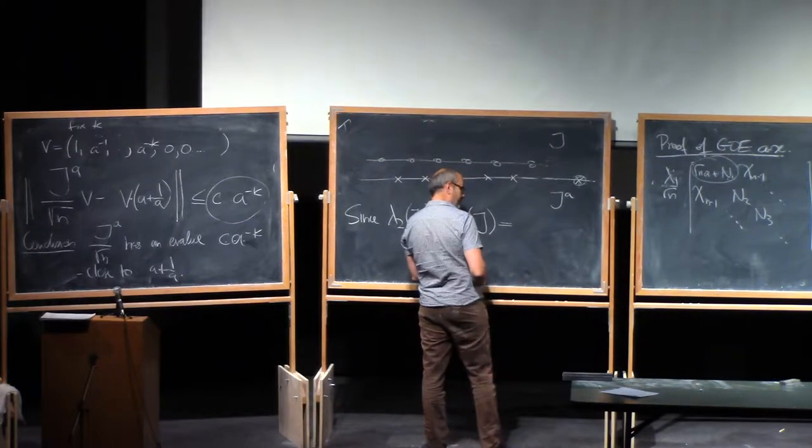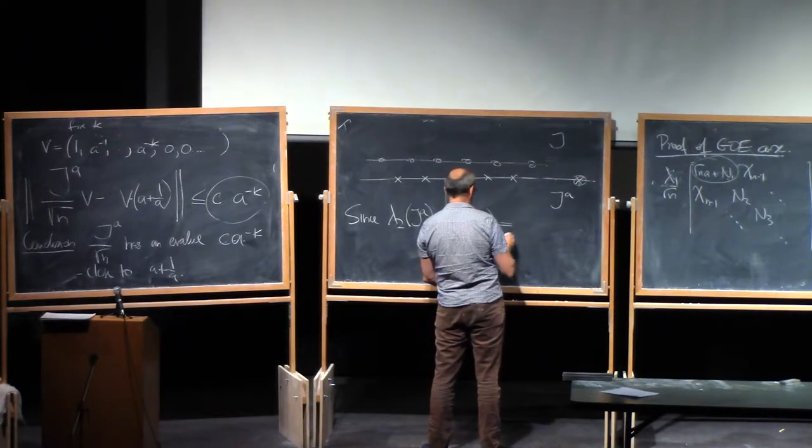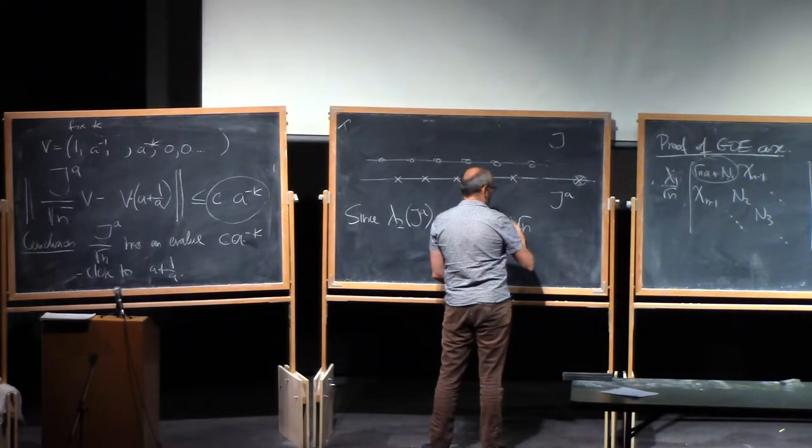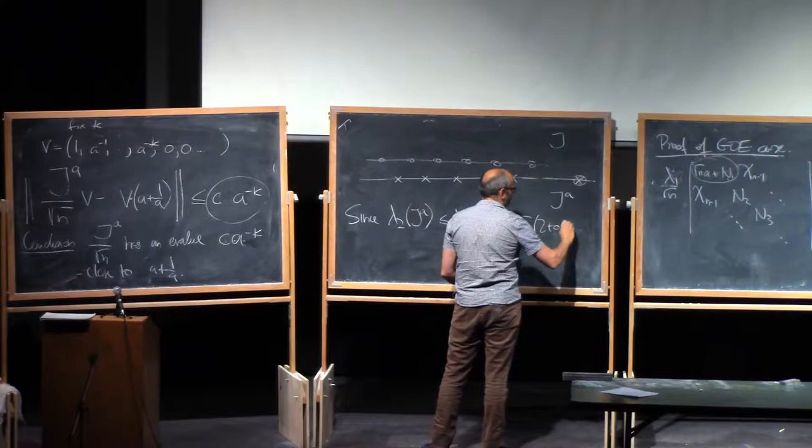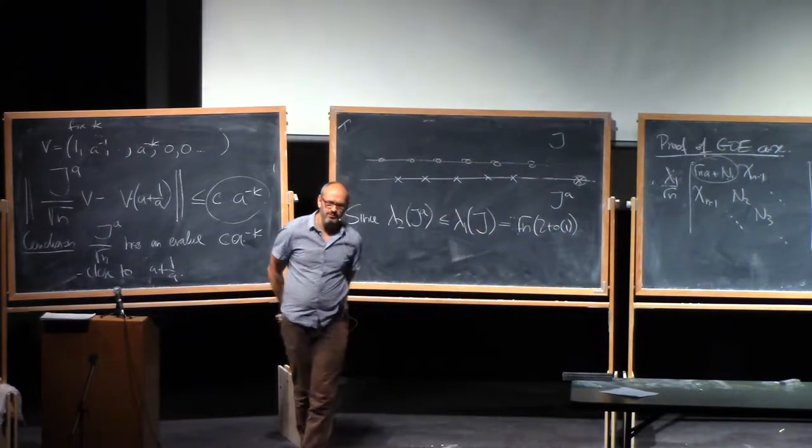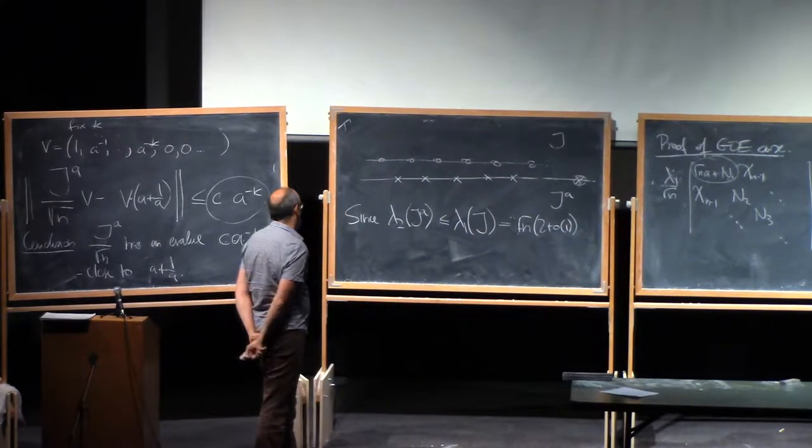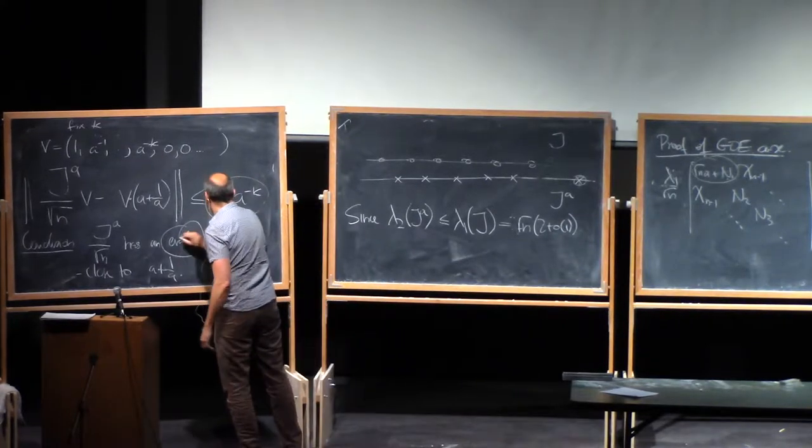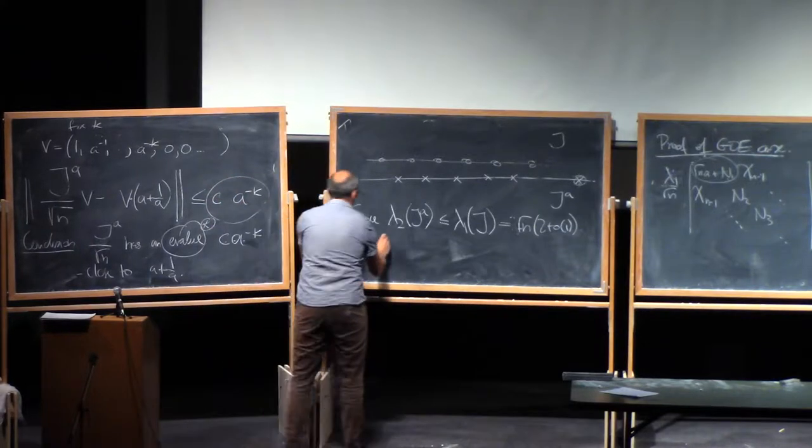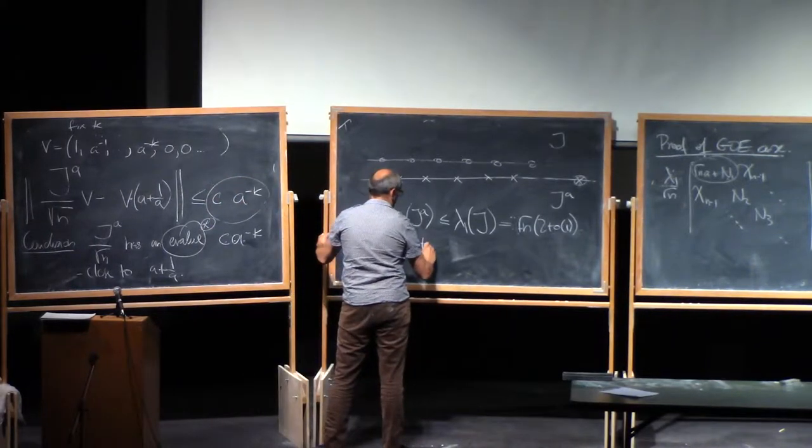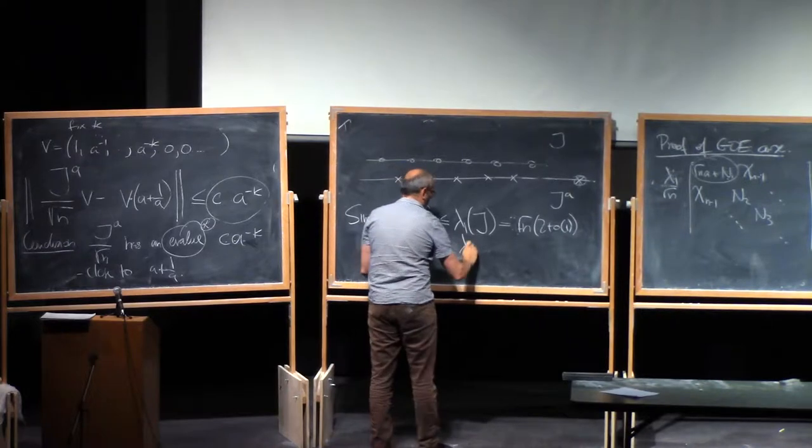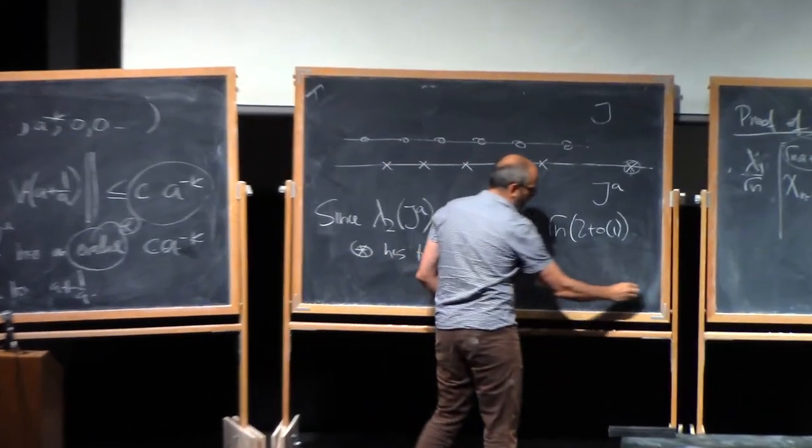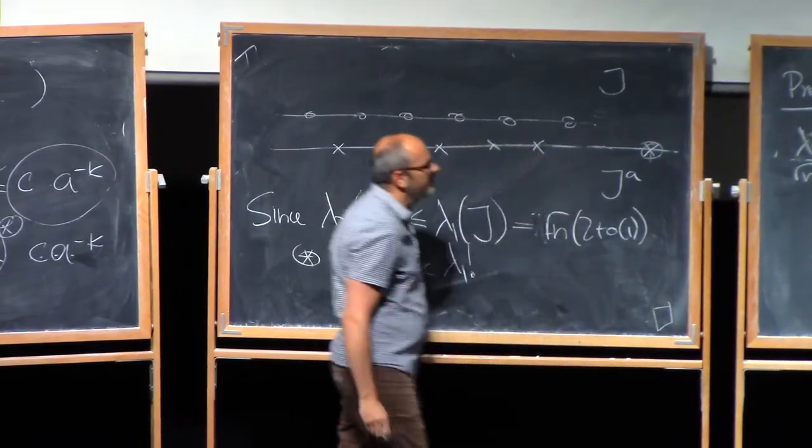So since lambda 2 of GA, so the second largest eigenvalue of GA, is less than or equal to the lambda 1 of J. And which we know is... Let's write it like that. Square root of N. 2 square root of 1 N. Square root of N times 2 plus little O of 1. Right? We have seen that from convolution 3D. So basically, this eigenvalue has to be lambda 1. So that's the end of the proof.